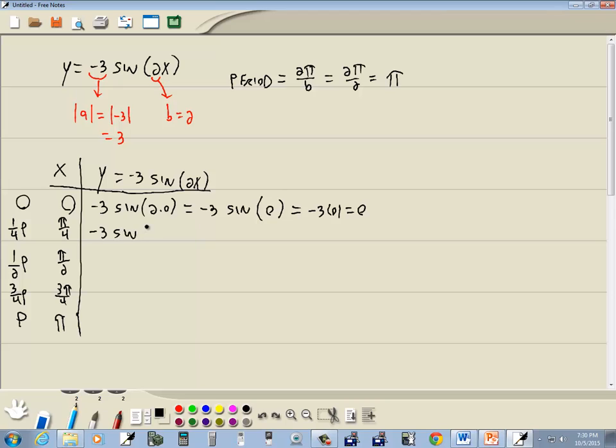And I've got negative 3 sine of 2 times π over 4, which gives us negative 3 sine of π over 2. And that's negative 3, and sine of π over 2 is 1. So that gives us negative 3.